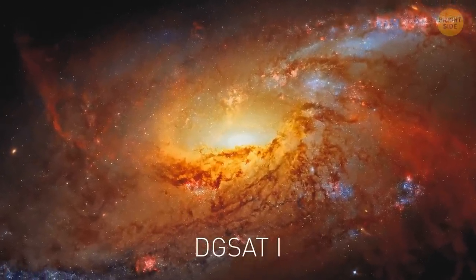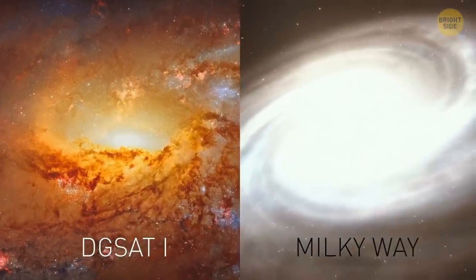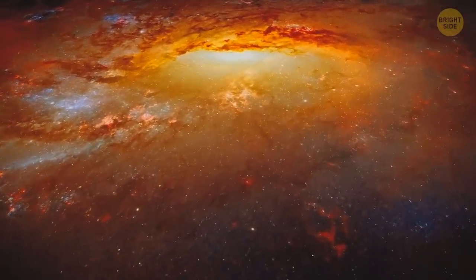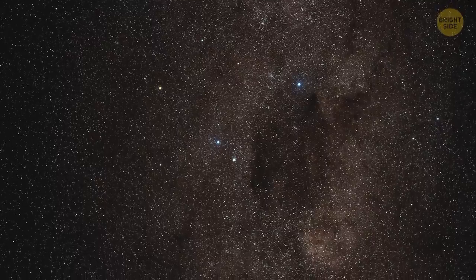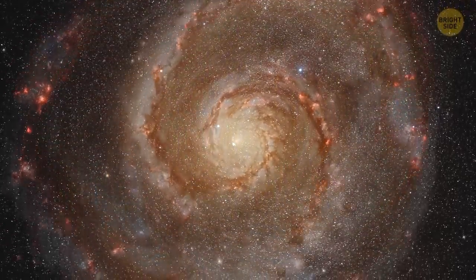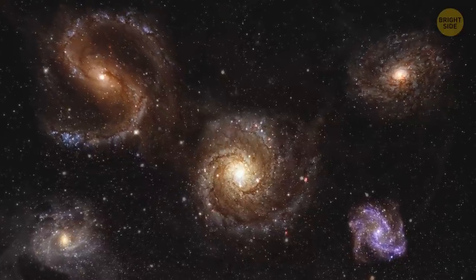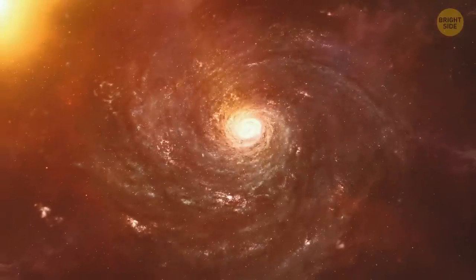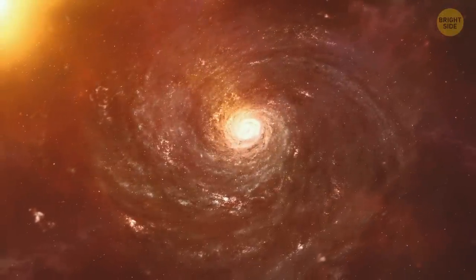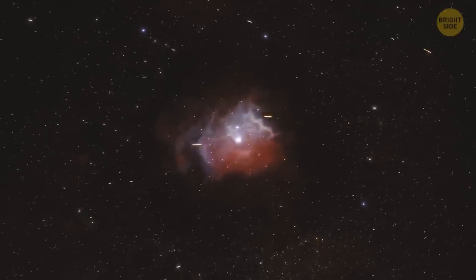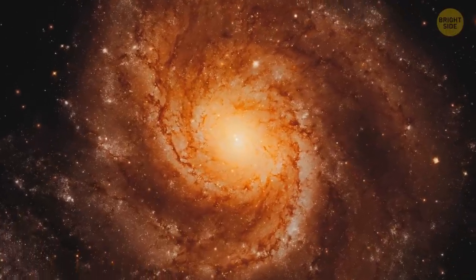DGSat1 galaxy is as big as the Milky Way, but it's nearly invisible because its stars are spread out incredibly thin. But what makes the galaxy so unique is that it's sitting all alone, unlike other galaxies of this kind. Those are usually found in clusters. It can mean that DGSat1 was formed in a different era, probably a mere 1 billion years after the Big Bang. If it's true, the galaxy is a real living fossil.